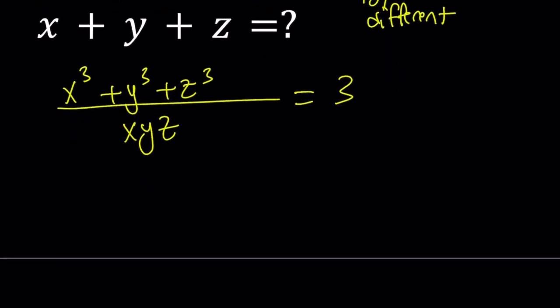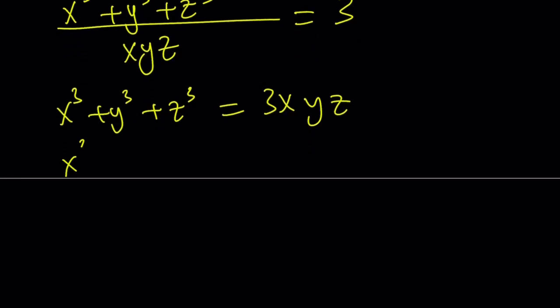Now, let's go ahead and cross multiply here. x cubed plus y cubed plus z cubed equals 3xyz. And then let's go ahead and put everything on the same side. And I'm going to ask you a question. Does this look familiar?